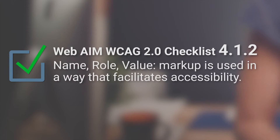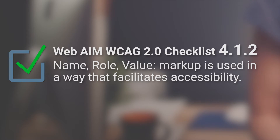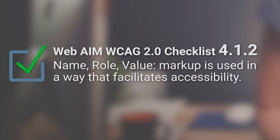We refer to this as expressing the semantics of an element. The WebAIM checklist explicitly calls this out in guideline 4.1 saying: name, role, value — markup is used in a way that facilitates accessibility.